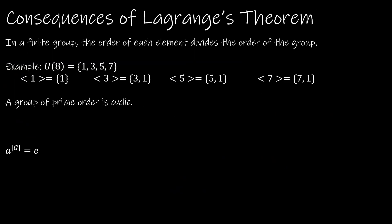There are a few corollaries of Lagrange's Theorem. The first says that in a finite group, the order of each element divides the order of the group. In U8, for example, the order of 1 is 1, the order of 3 is 2, the order of 5 is 2, and the order of 7 is 2. Each of these divides the order of the group, which is 4 — so 1 divides 4, 2 divides 4, and so forth.